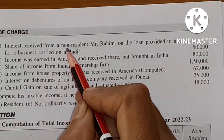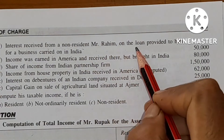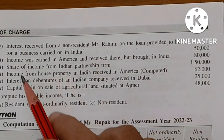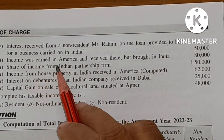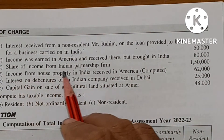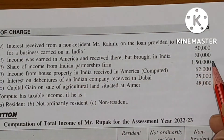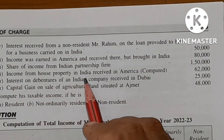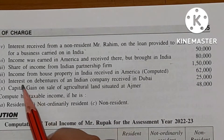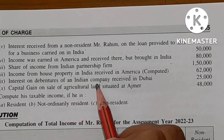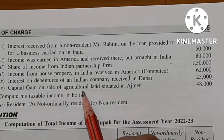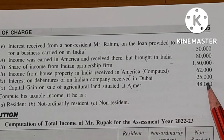Interest received from a non-resident Mr. Raheem on the loan provided to him for a business carried out in India — 50,000. Income was earned in America and received there but brought to India — 80,000. Share of income from Indian partnership firm — 1,50,000. Income from house property in India received in America, computed — 62,000. Interest on debenture of an Indian company received in Dubai — 25,000. Capital gain on sale of agriculture land situated at Ajmer — 48,000.